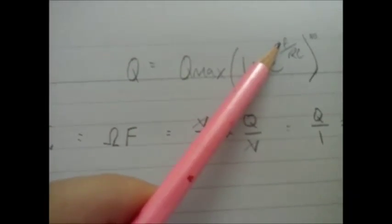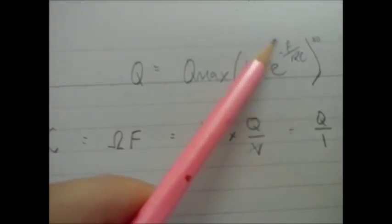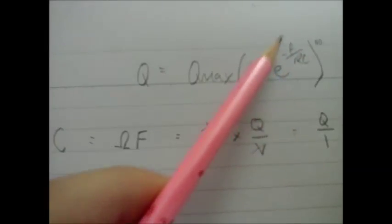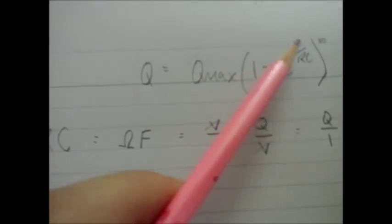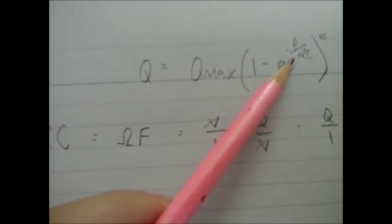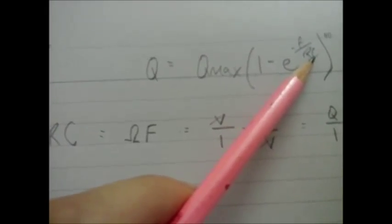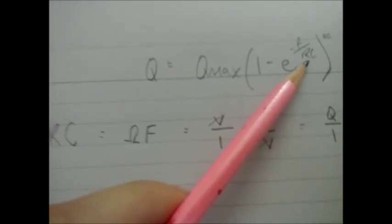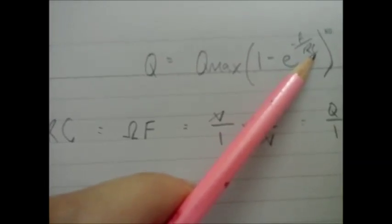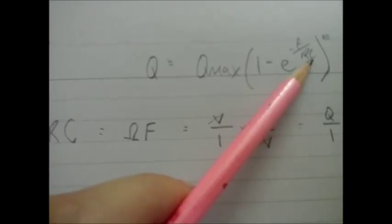The value for time we stick in there will be in seconds. And because this number has to be a unitless number, that means R times C must have units of seconds. And I was like, what, resistance times capacitance must have units of seconds? So it got me thinking.